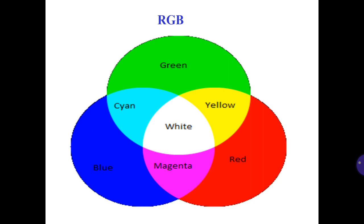In RGB the main colors are red, green, and blue. If you mix blue and green, you get cyan. If you mix blue and red, you get magenta. And if you mix all the colors, you get white.